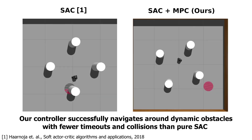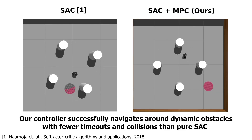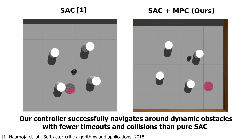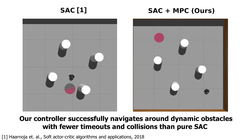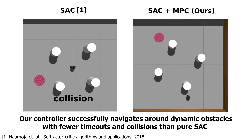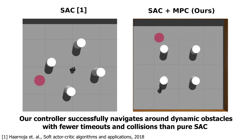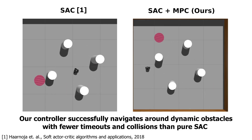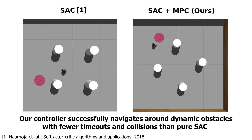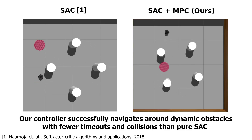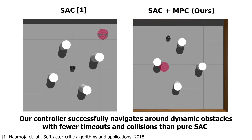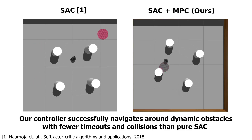The second scenario is with rotating obstacles, where neither the MPC nor the SAC has any knowledge about the behavior of the obstacles. This scenario shows that even if the MPC doesn't have any knowledge about the behavior of the obstacles, it still improves the training of the RL agents.